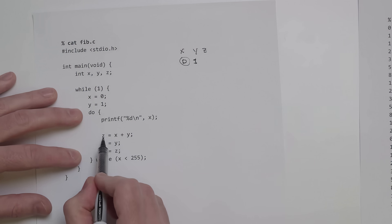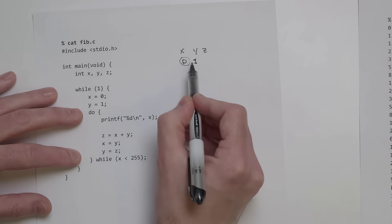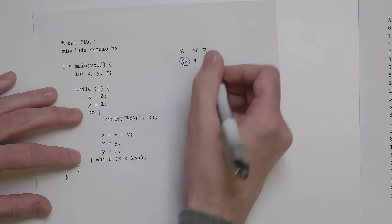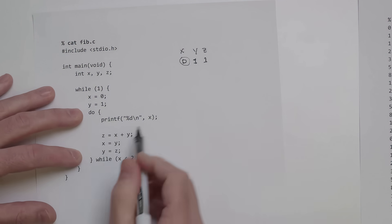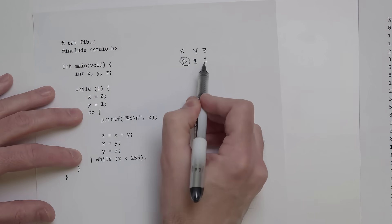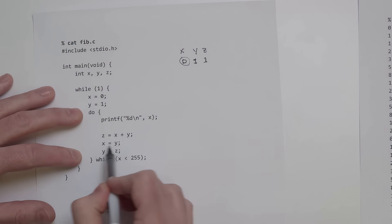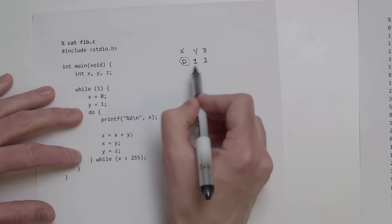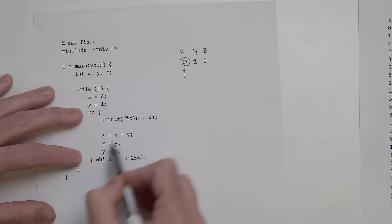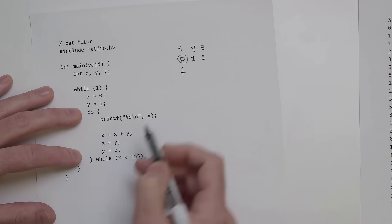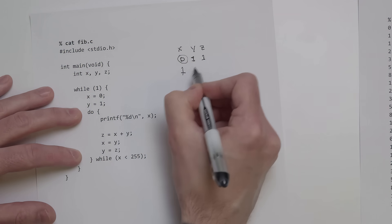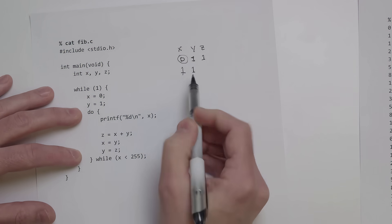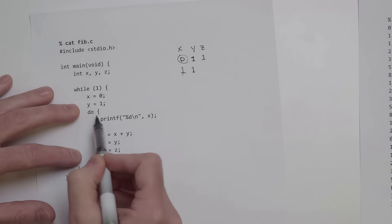We calculate z as x plus y, so 0 plus 1 is 1. Then we shift all these numbers over: x gets equal to y so x becomes 1, y equals z so y becomes 1 as well. Then we loop through again.